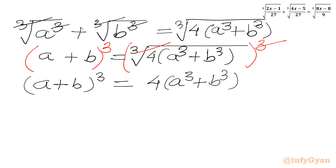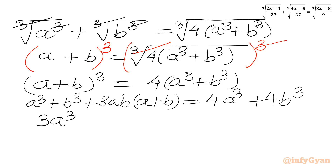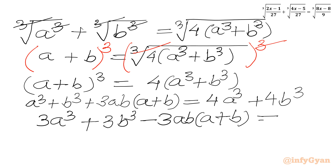Now we will apply the (a + b)³ identity. So we can write: a³ + b³ + 3ab(a + b) equal to 4a³ + 4b³. Taking all terms to the RHS: 4a³ − a³ gives 3a³, and 4b³ − b³ gives 3b³, minus 3ab(a + b) equals 0.